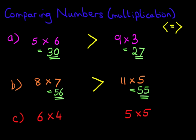Again, the first thing we do is, let's work out the answers. 6 times 4 is? 24. 5 times 5 is? 25.